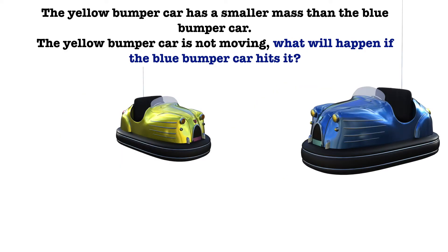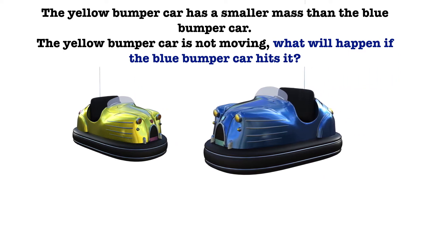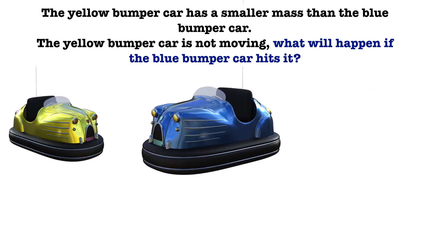The yellow bumper car has a smaller mass than the blue bumper car. This time it's the yellow bumper car that's not moving. So what will happen if the blue bumper car hits it? The action force of the blue bumper car will cause the yellow car to move backwards. The reaction force from the yellow onto the blue will slow the speed of the blue car.